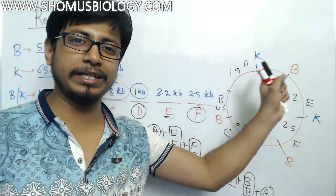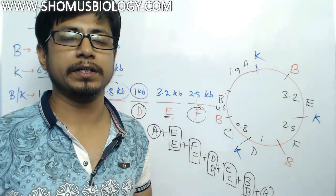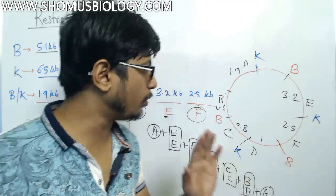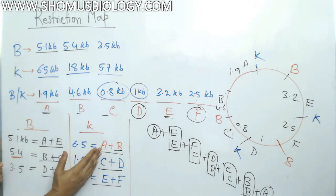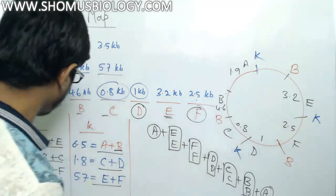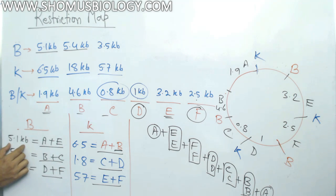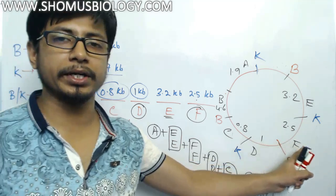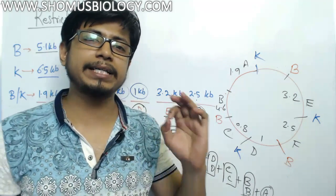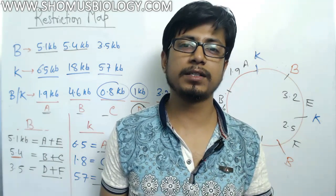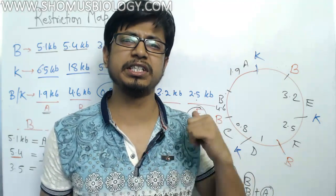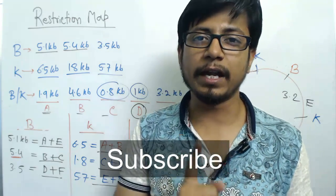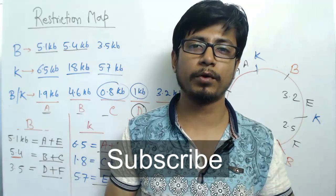If this seems confusing, I recommend watching this video at least twice. At the end, we've simply drawn the fragments, drawn the graph, and looked at where each fragment boundary falls to assign the enzyme cut sites — B cuts between A/E, B/C, and D/F; K cuts between A/B, C/D, and E/F. This trick can be used to answer any restriction mapping question in an exam within two to three minutes. If you like this video, please hit the like button, share it with your friends, and subscribe to my channel for more videos. Thank you.